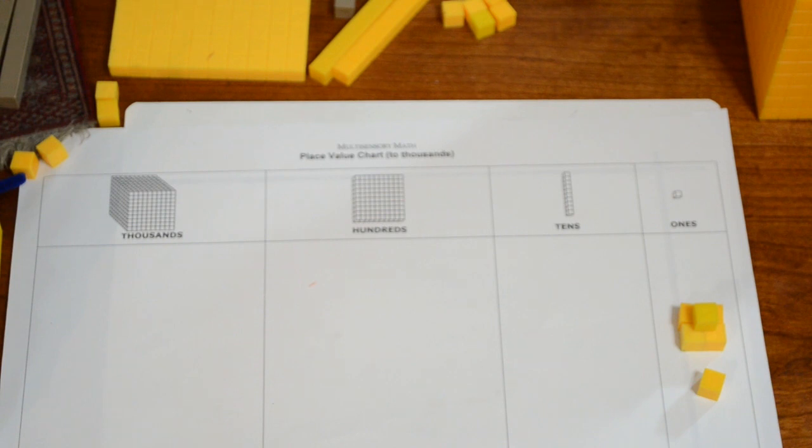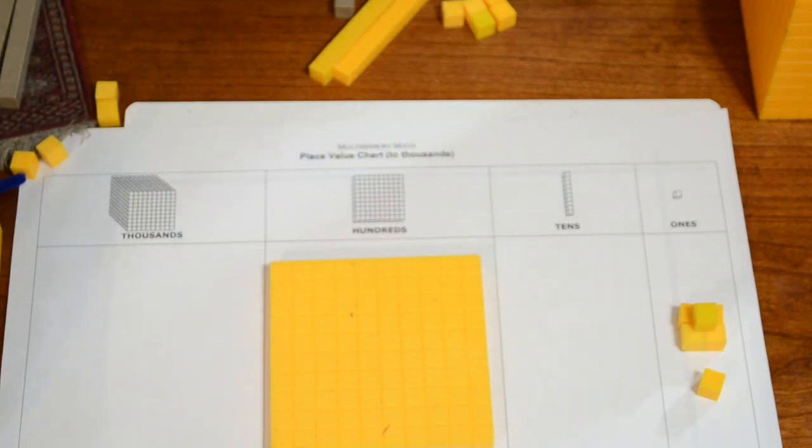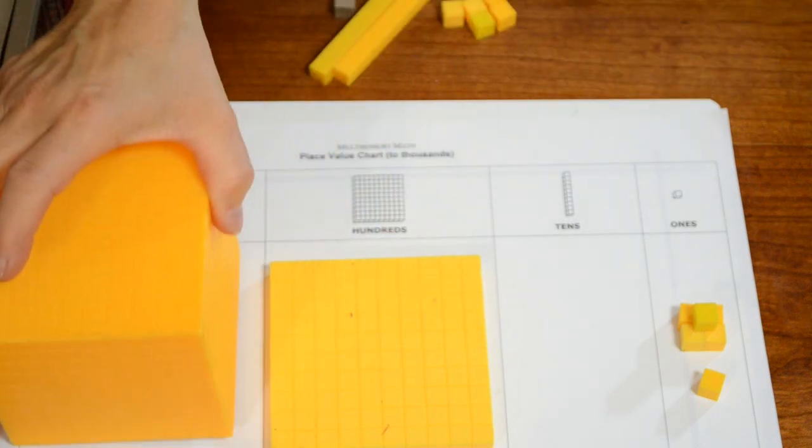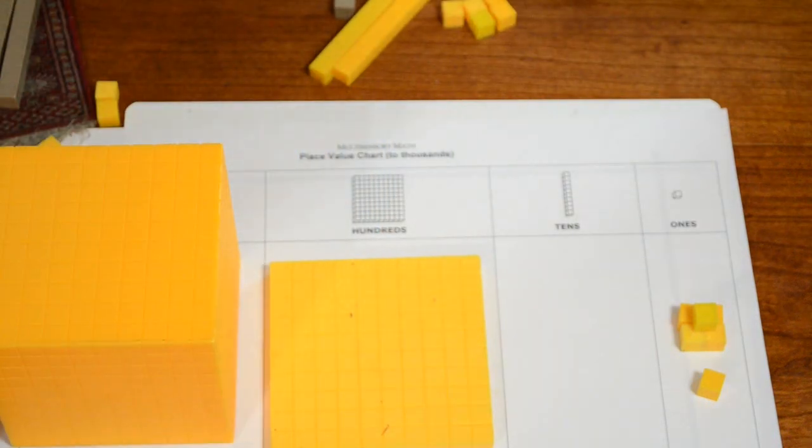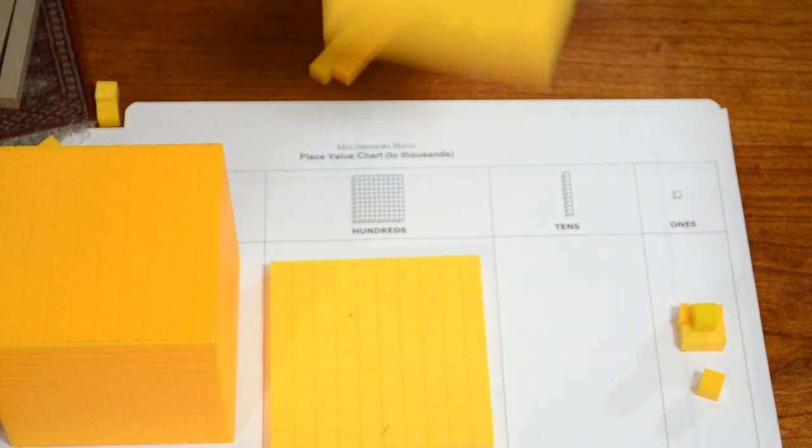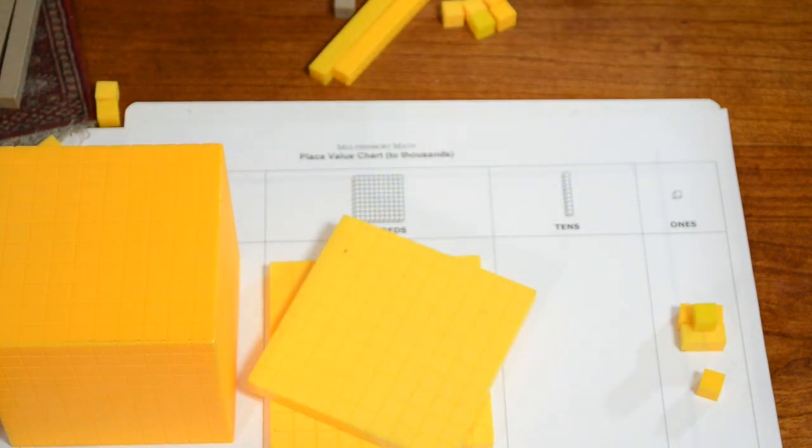Show me six. If that's six, show me 106. If that's 106, show me 1,106. If that's 1,106, change it to 1,206. And thus, the teacher can walk around the classroom and assess whether individual students have actually learned the place value.